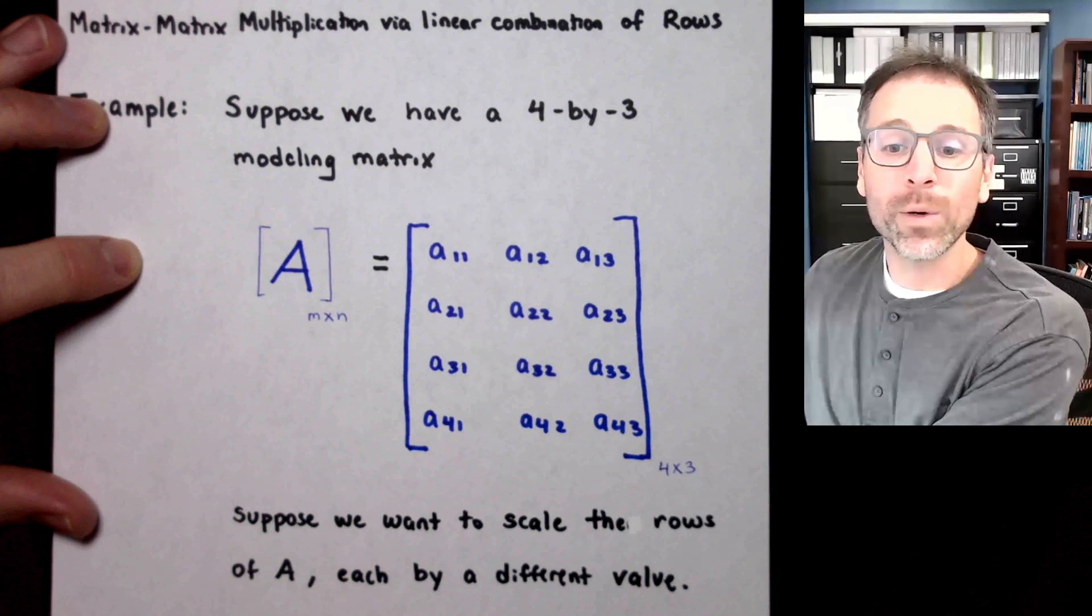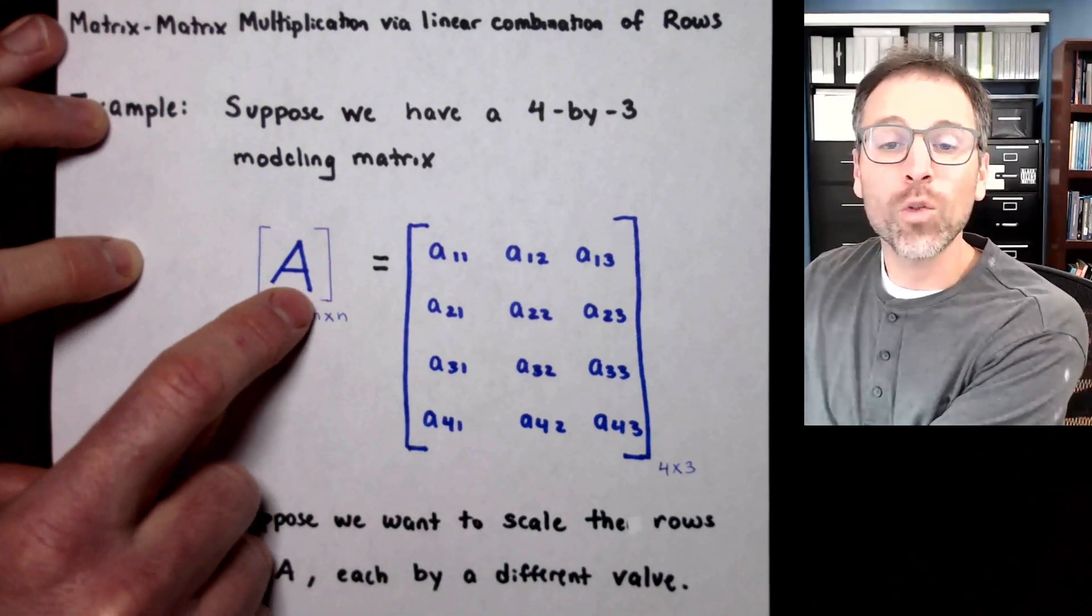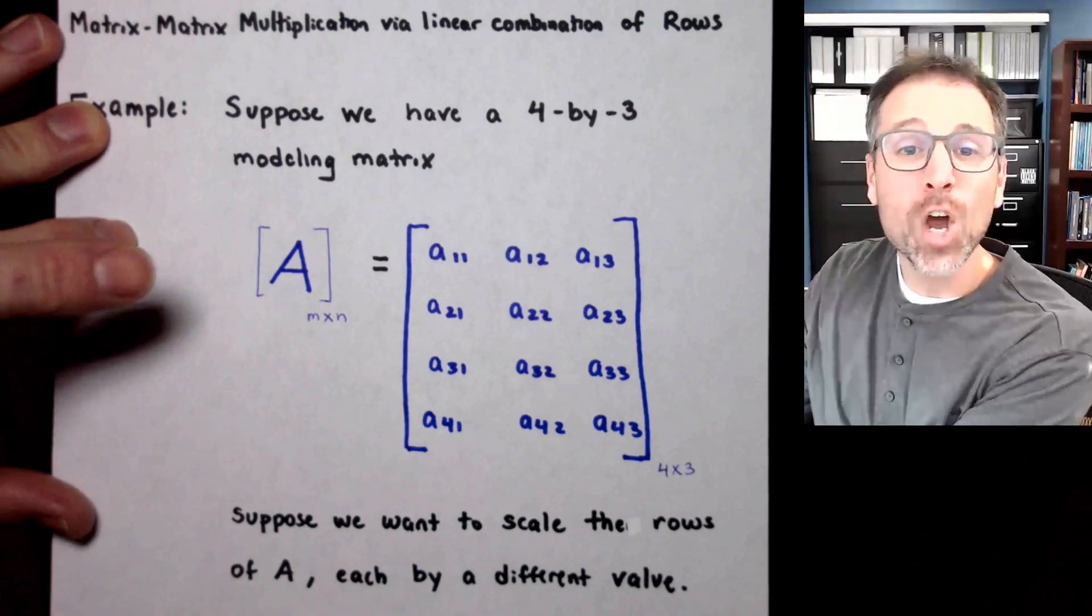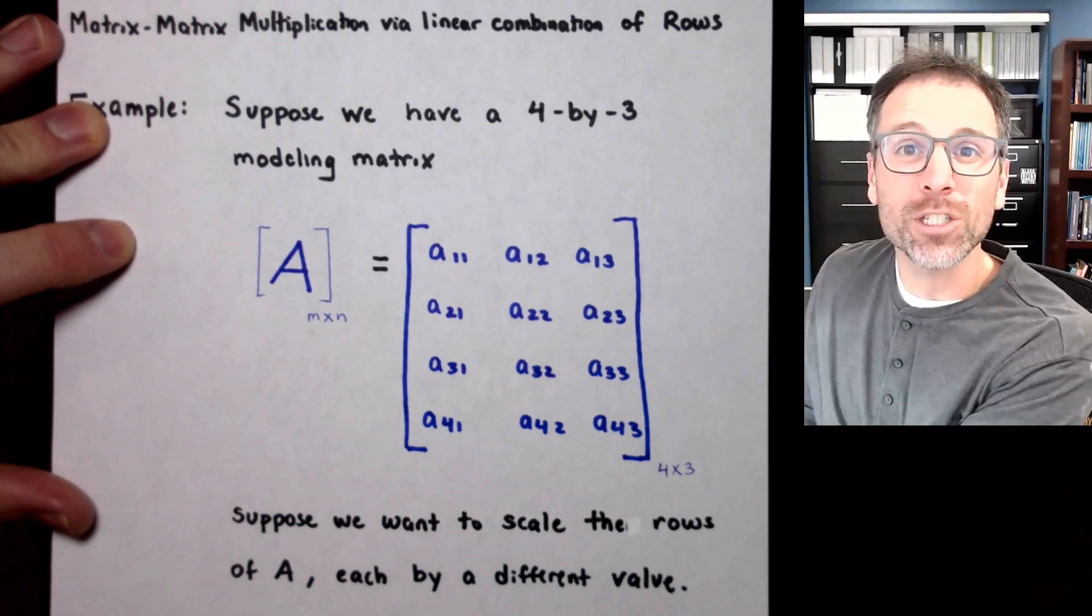In this example, that's exactly what we want to do. We want to scale the rows of A each by a different number. So immediately we're thinking we're going to use left matrix-matrix multiplication.